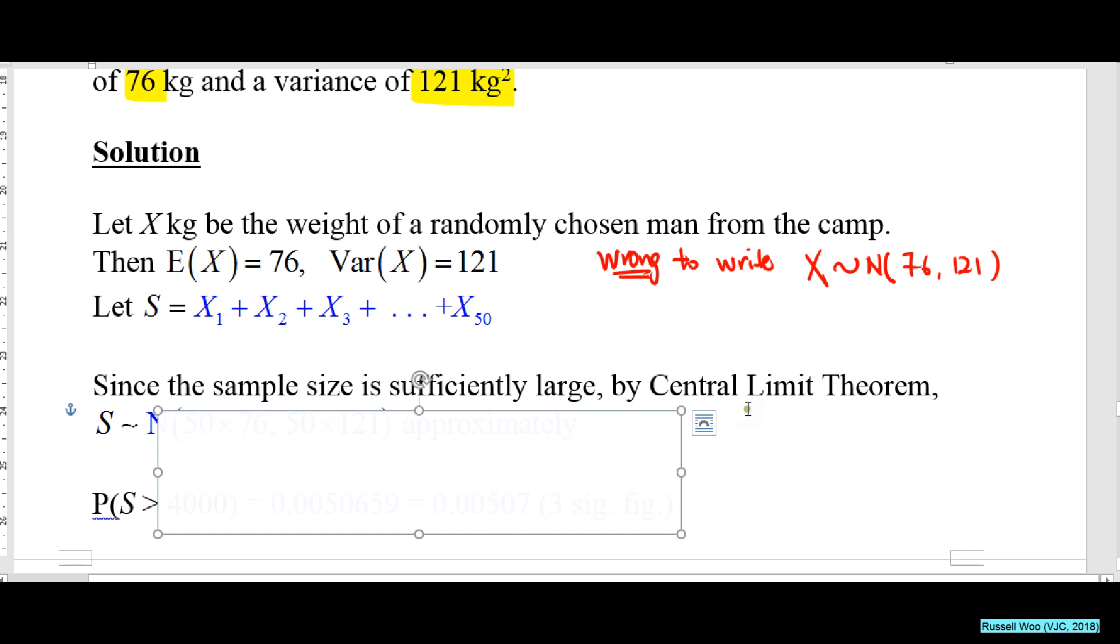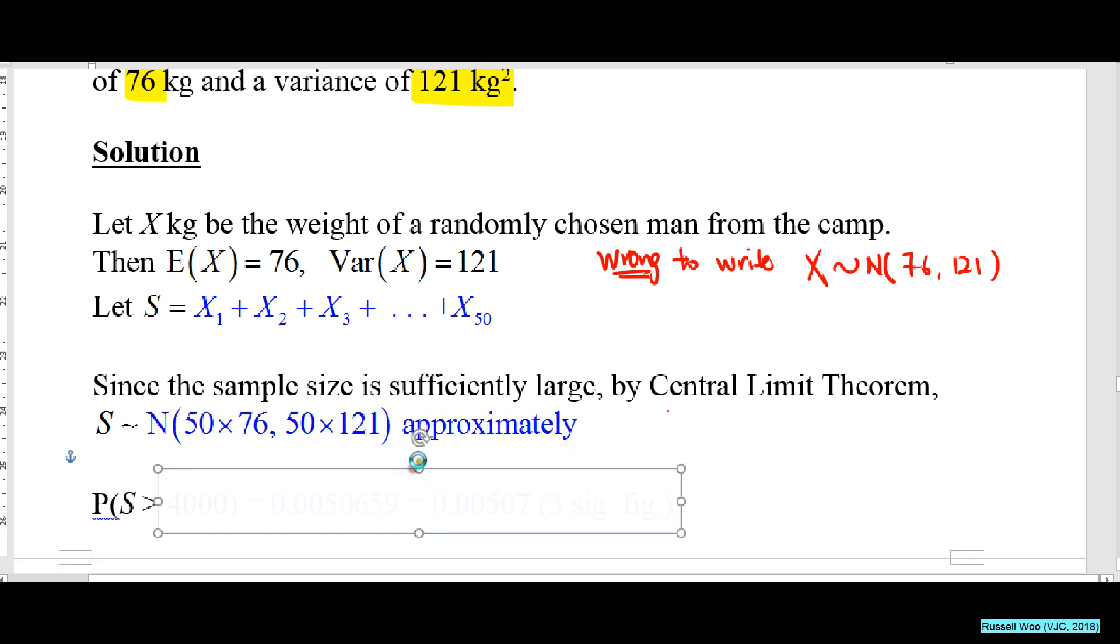What should S follow, this distribution? Two things: one, you must write approximately because it is an approximate normal distribution. This is nμ, this is nσ². This is from above.